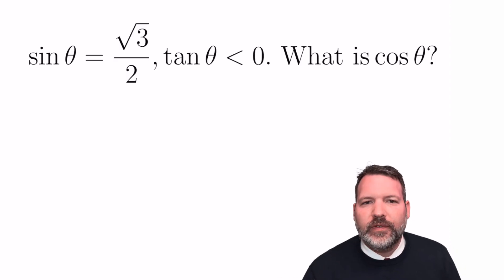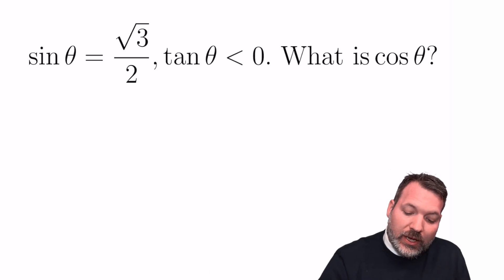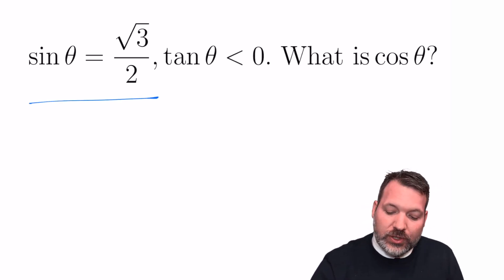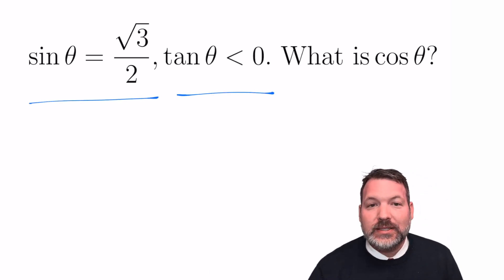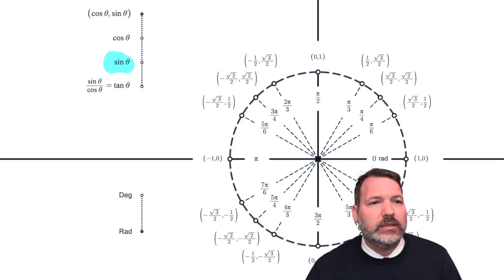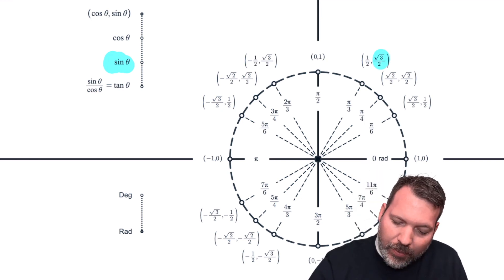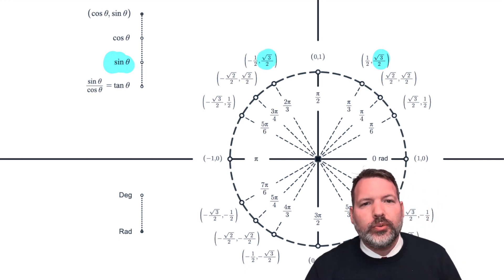So back to this problem we started the video with. How do we use something like this interactive unit circle to figure out the value of cosine theta, given basically two clues? Sine theta is root 3 over 2, and tangent theta is less than 0. Using something like this unit circle, the first thing I would do is I would ask myself, okay, sine theta, which again are the y-coordinates, is supposed to be equal to root 3 over 2. Where does it happen that my y-coordinates are root 3 over 2?